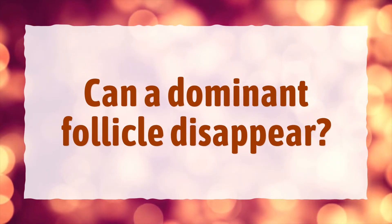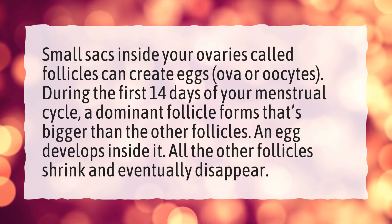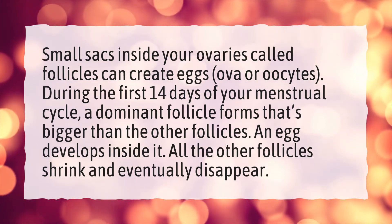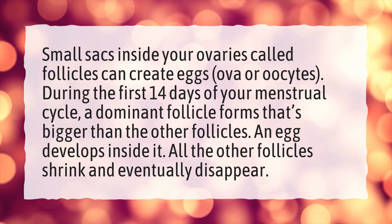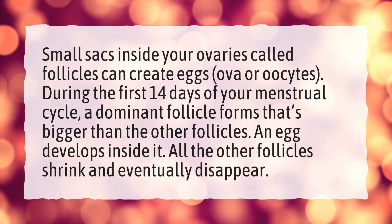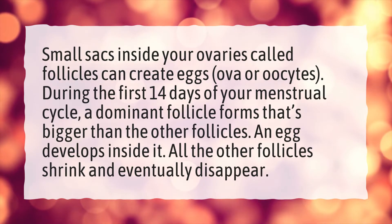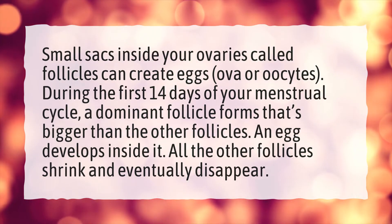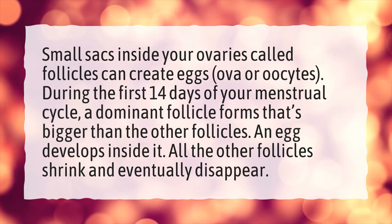Can a dominant follicle disappear? Small sacs inside your ovaries called follicles can create eggs, ova or oocytes. During the first 14 days of your menstrual cycle, a dominant follicle forms that's bigger than the other follicles. An egg develops inside it, and all the other follicles shrink and eventually disappear.